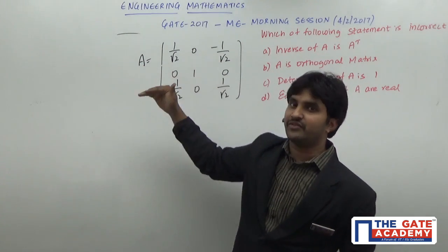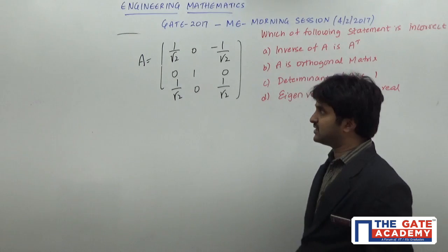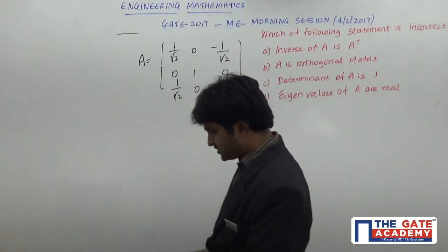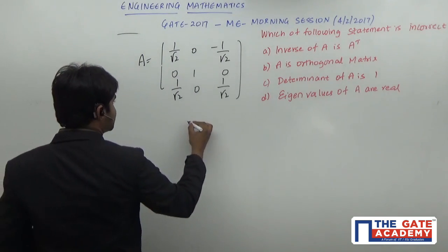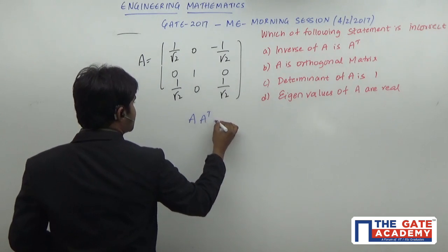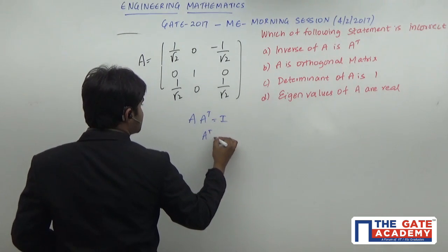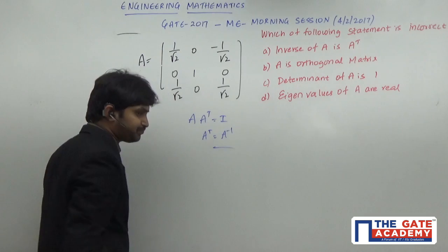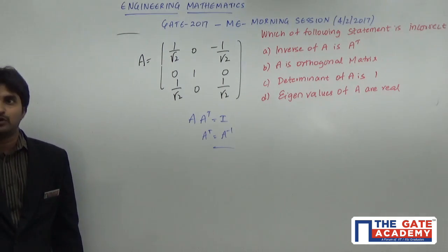By looking at the question itself, we can say it's going to be an orthogonal matrix. For an orthogonal matrix, the property that is satisfied is A·A^T = I, so A^T = A^(-1).